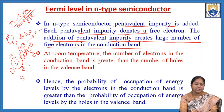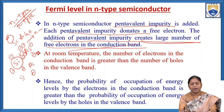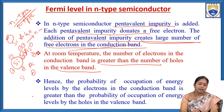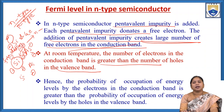In N-type semiconductors, if pentavalent impurity is added to a pure semiconductor, it gives an N-type semiconductor. Each arsenic atom donates one electron, so the addition of pentavalent impurity creates a large number of free electrons in the conduction band. At room temperature, the number of electrons in the conduction band is greater than the number of holes in the valence band.